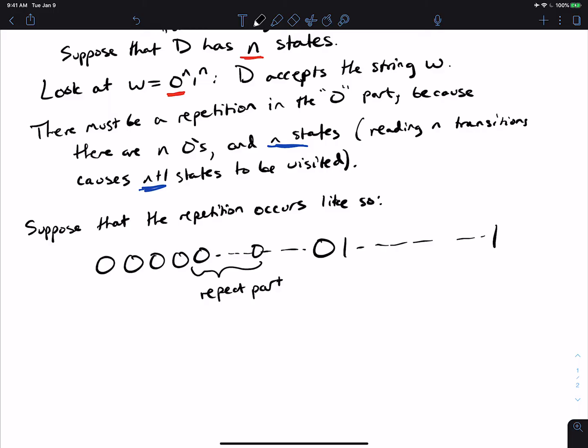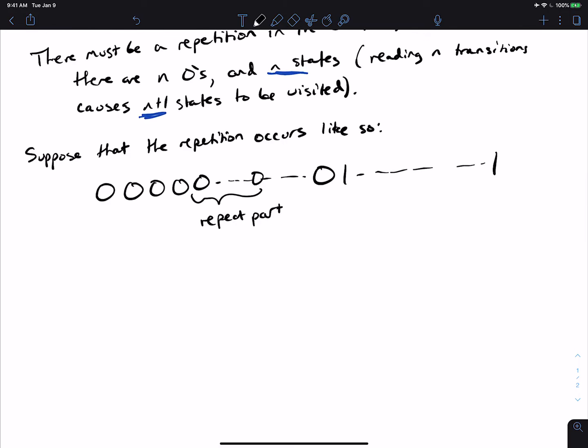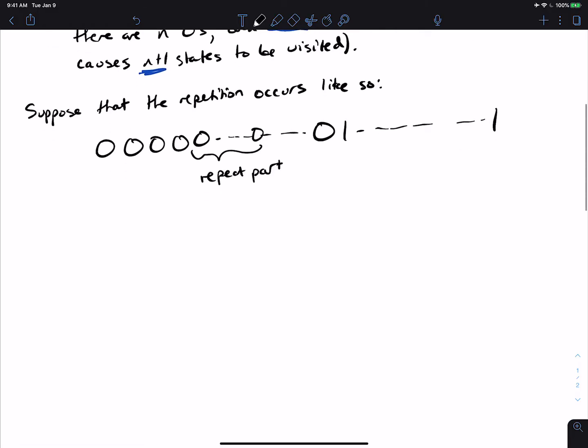So, we ended up in some state at this point. And after we read this repeat part, we end up back at the exact same state. Because there's a repetition. I don't know what state that is, but there must be a state like that.